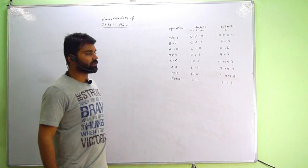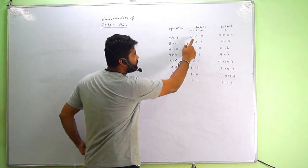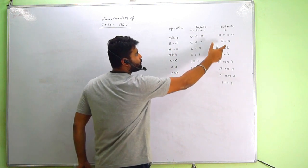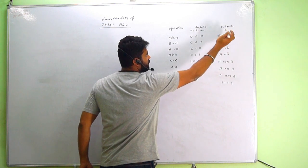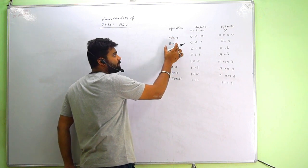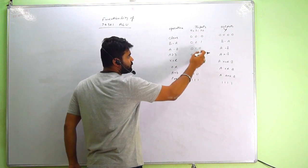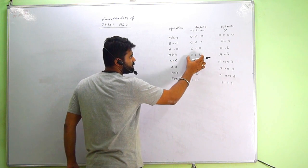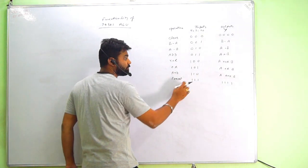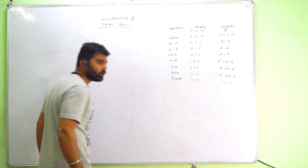I've already written the functionalities — I'll explain briefly. For the 74381, the 3-bit input codes are: 000 for clear (output 0000), 001 for B minus A, 010 for A minus B, 011 for addition, 100 for XOR, 101 for OR, 110 for AND, and 111 for preset — output will be all 1s.